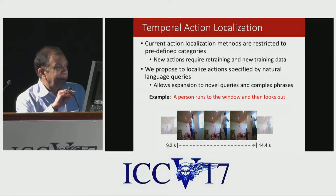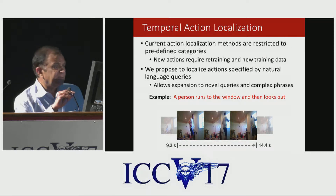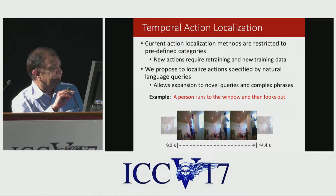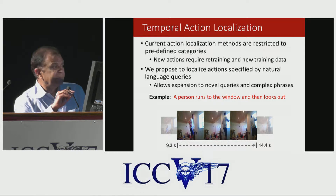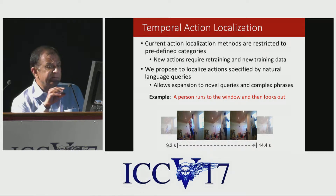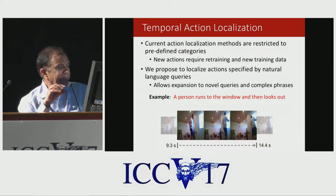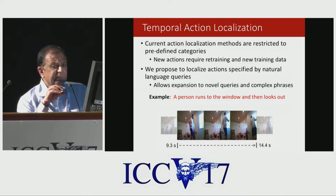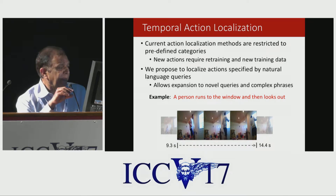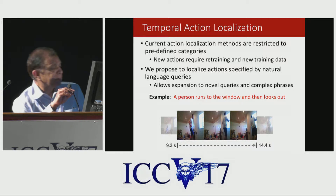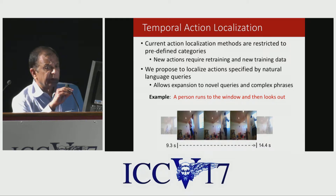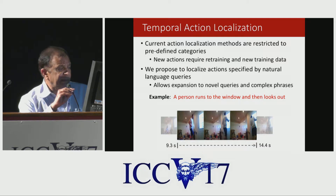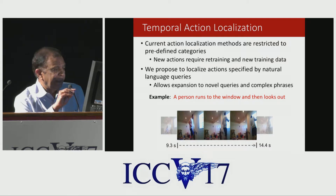There are many action localization methods in the literature. They're typically restricted to predefined categories. If you want to add a new action category, you need to retrain the system and provide training data. We propose to localize actions specified by natural language queries, so new queries can be added without any training data.